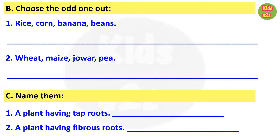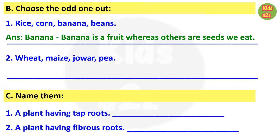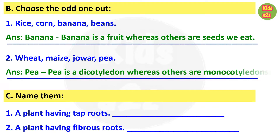Number one: rice, corn, banana, and beans. The odd one is banana, because banana is a fruit whereas the others are seeds we eat. Number two: wheat, maize, jowar, and pea. The odd one is pea, because pea is a dicotyledon whereas the others are monocotyledons.